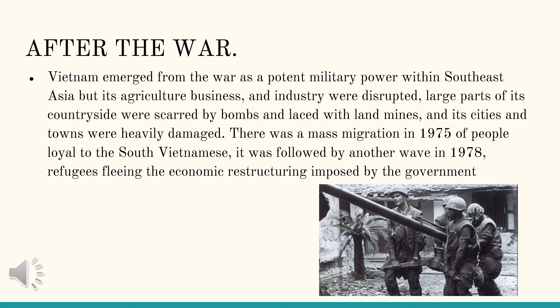After the war, Vietnam emerged as a potent military power within Southeast Asia, but its agricultural businesses and industries were disrupted. Large parts of the countryside were scarred by bombs and landmines, and its cities and towns were heavily damaged. There was a massive migration in 1975 of people loyal to South Vietnam, followed by another wave in 1978 of refugees fleeing the economic restructuring imposed by the government.